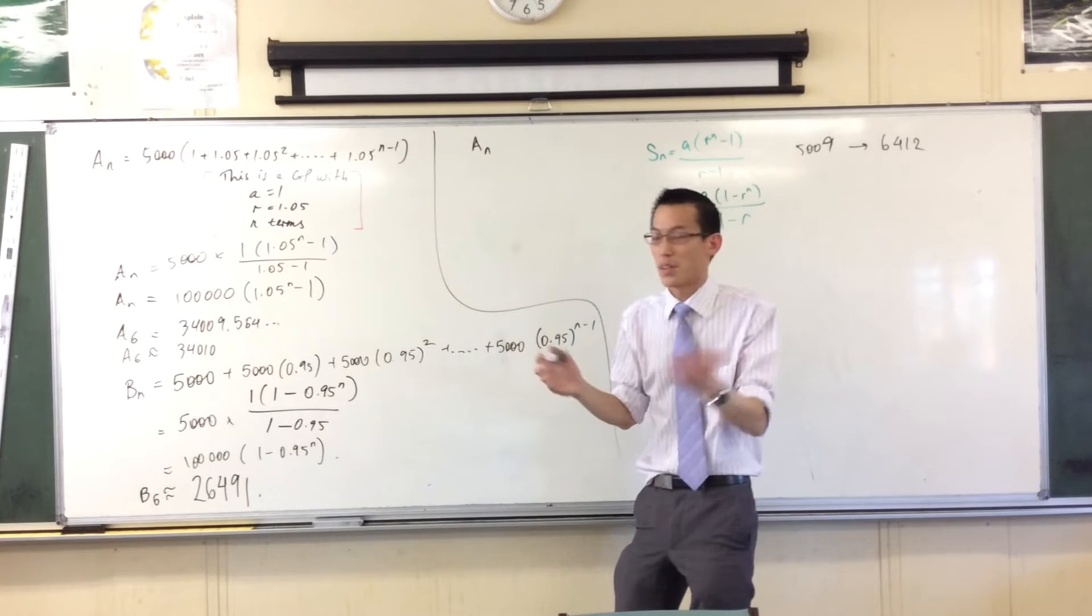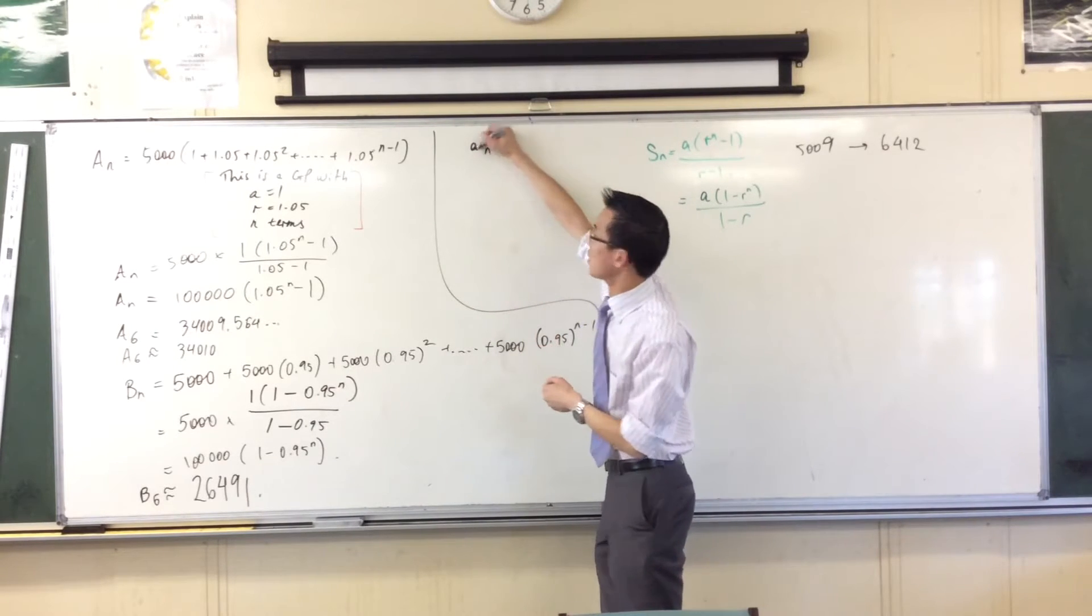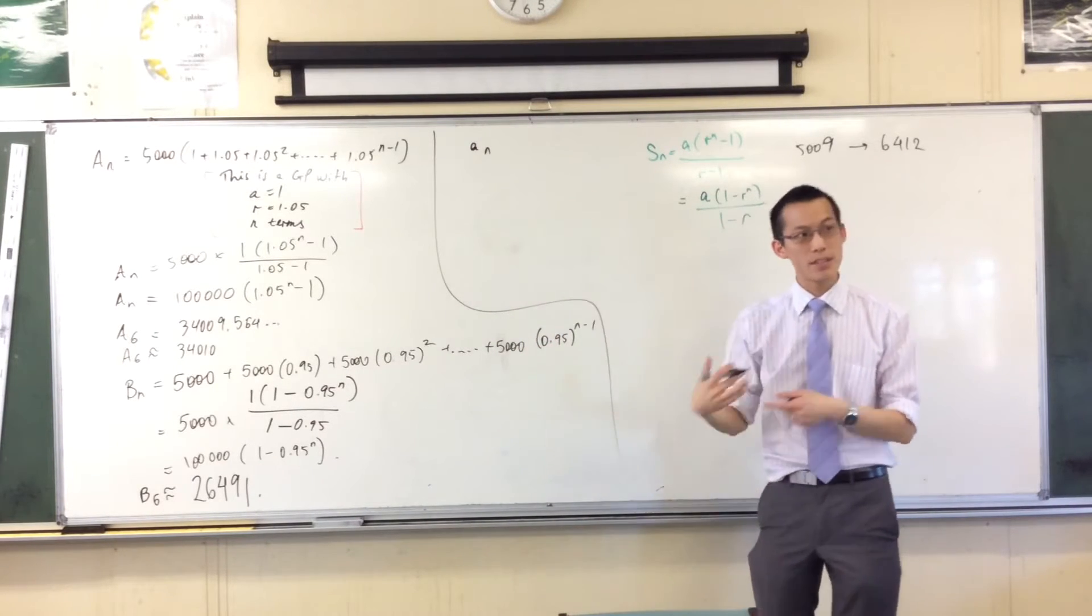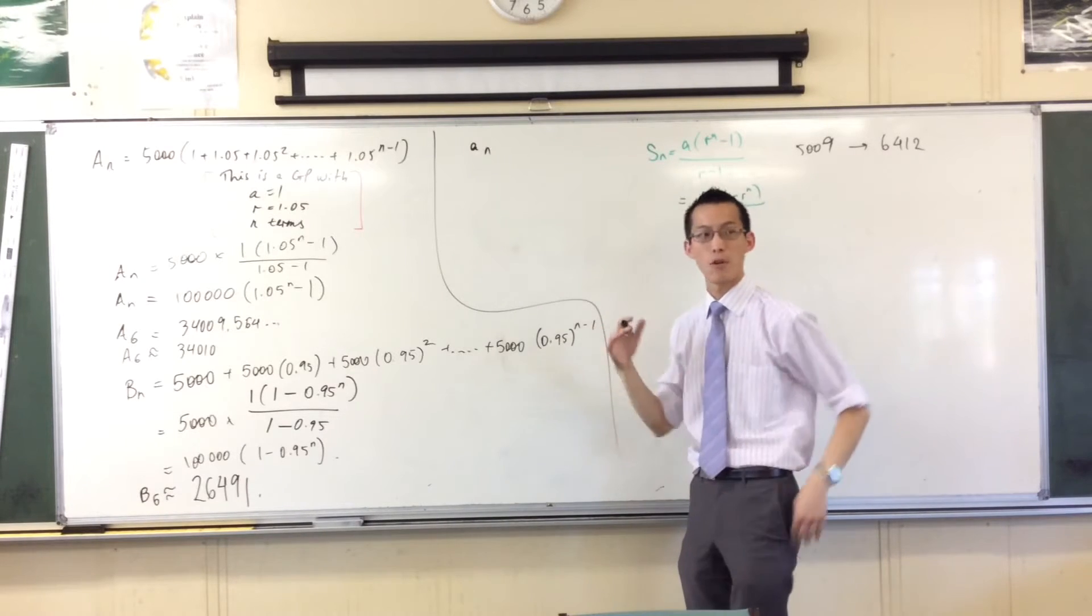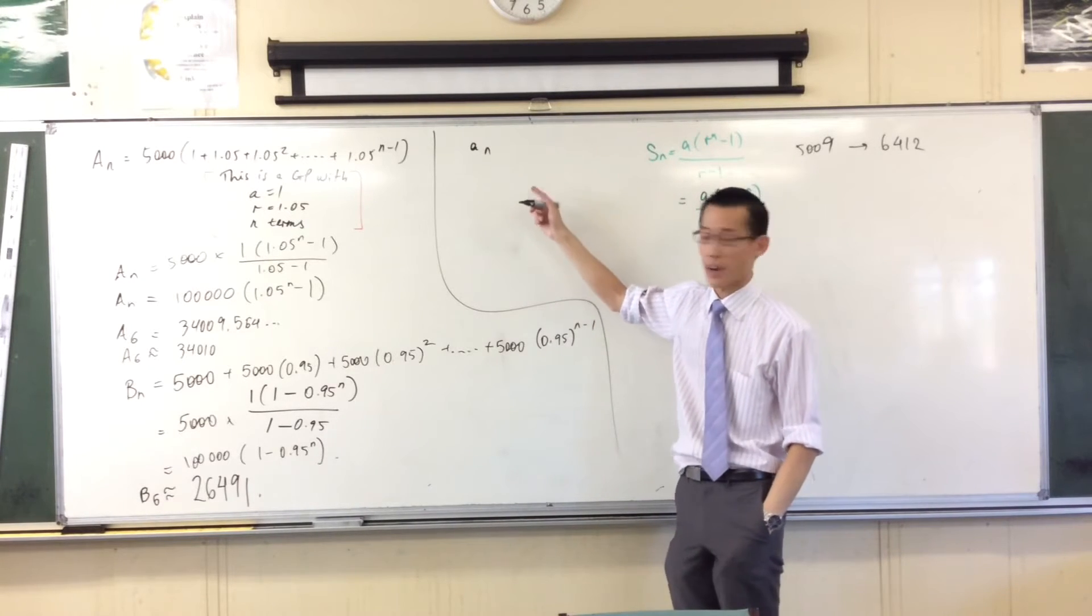So therefore I can't use this notation because I've already defined it in another way, right? So you need to find out, maybe you just use a lowercase or something like that. So this is, rather than the sum, this is for each individual year.